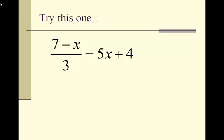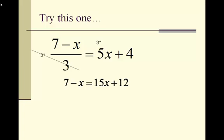The first step on this next problem is to multiply both sides of the equation by 3. When you multiply the left side by 3, it just cancels out the 3 on the bottom of the fraction, so keep the top — 7 minus x — the same. On the right side, you actually multiply 5x plus 4 all by 3, turning it into 15x plus 12. So right now we have 7 minus x equals 15x plus 12.